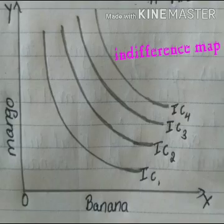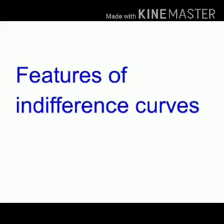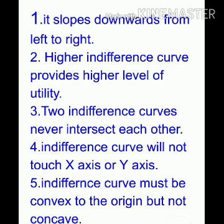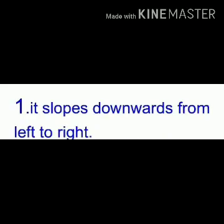The next concept is features of indifference curves. The first feature is that the indifference curve slopes downwards from left to right. Why does it always slope downwards? As the consumer increases the consumption of X good, he has to reduce the consumption of Y good. The indifference curve is downward sloping because of the operation of MRS — marginal rate of substitution — and because the consumer must stay at the same level of utility.